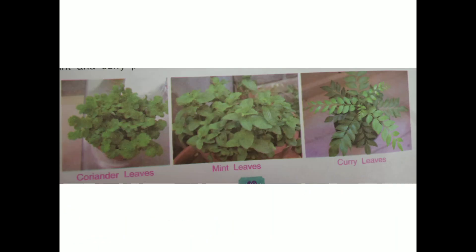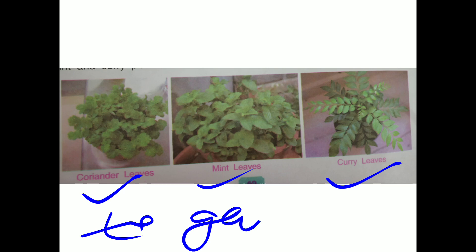Now see coriander leaves — nowadays you will get coriander leaves in the market. And mint leaves you get in the summer season. Curry leaves you always see. These are used to garnish the food items.